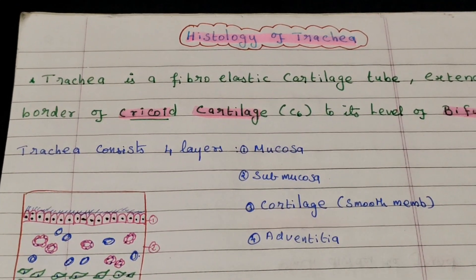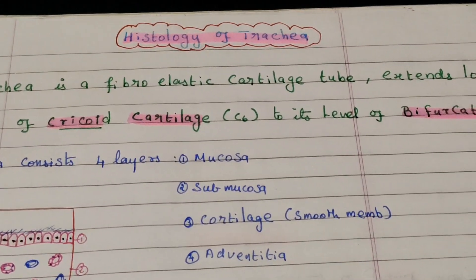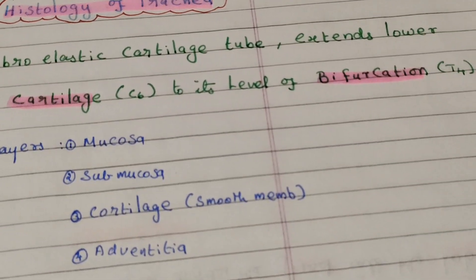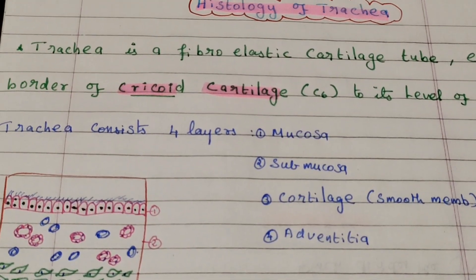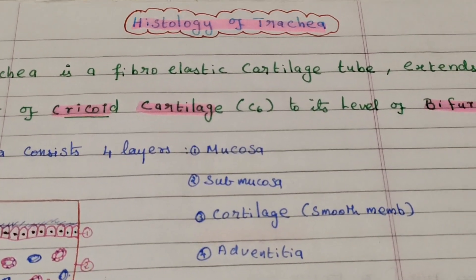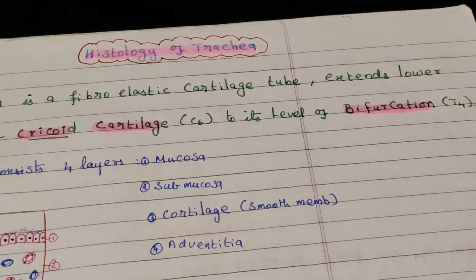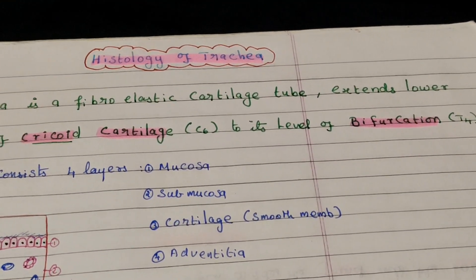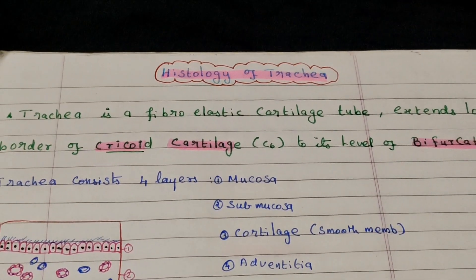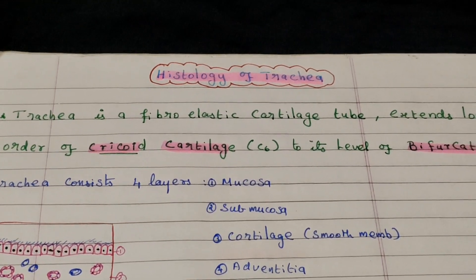Today's topic of discussion is the histology of the trachea. The trachea is a fibroelastic cartilage tube that extends from the lower border of the cricoid cartilage at C6 to its level of bifurcation at T4.